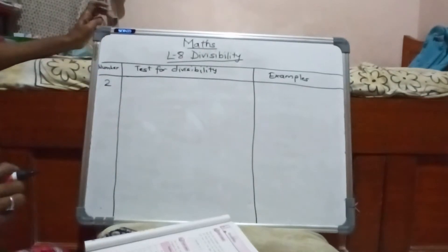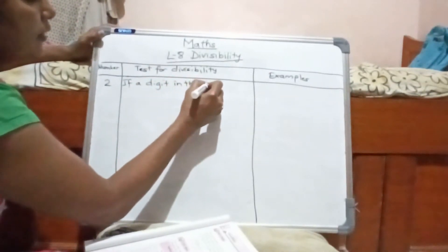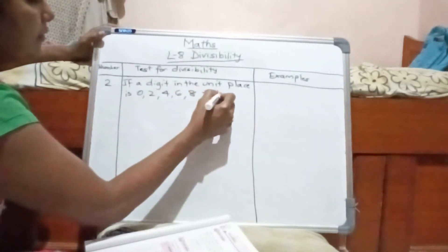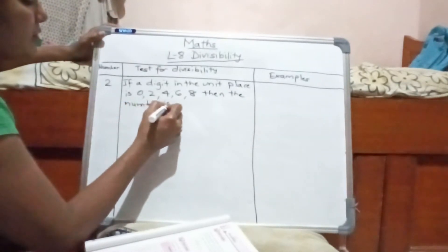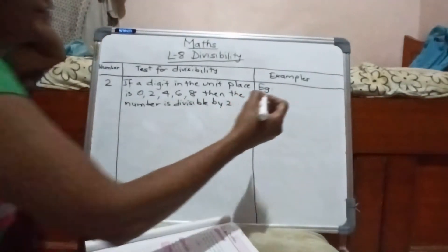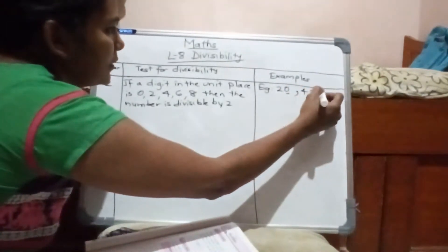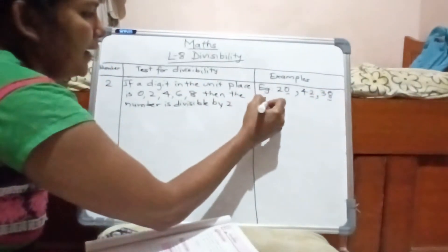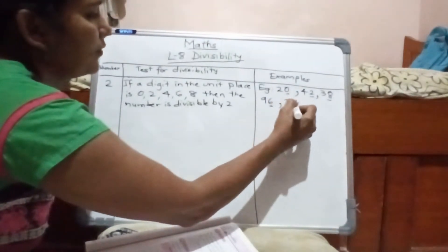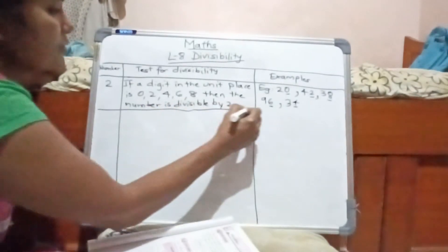First, we will recall how to find that a number is divisible by 2. If the digit in the unit place is 0, 2, 4, 6, or 8, then the number is divisible by 2. Examples: 20, 42, 38, 96. All the digits in the unit place are 0, 2, 4, 6, or 8, so these numbers are divisible by 2.